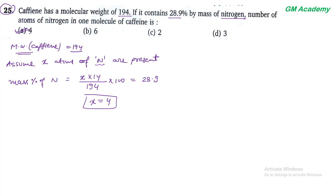Nitrogen का mass percentage calculate करने के लिए: number of atoms × atomic weight of nitrogen / total molecular weight × 100 = 28.9. इस equation को solve करने पर x = 4 atoms of nitrogen मिलते हैं।